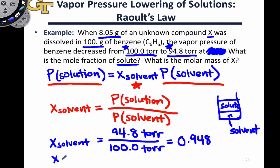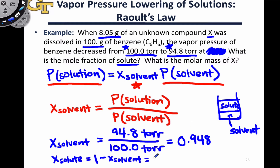Conceptually then, the mole fraction of the solute is equal to 1 — the total number of moles, if you like — minus the mole fraction of the solvent. In this case, that's 1 minus 0.948, which is 0.052.